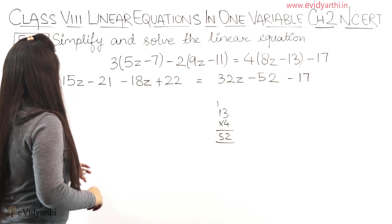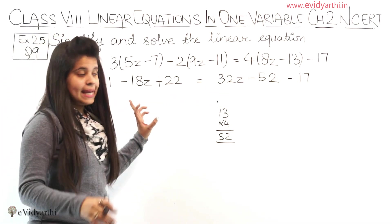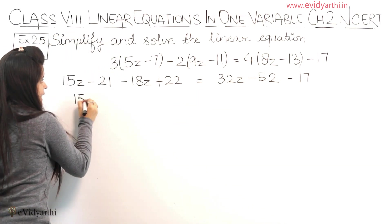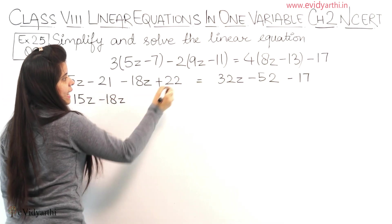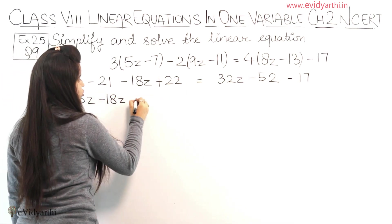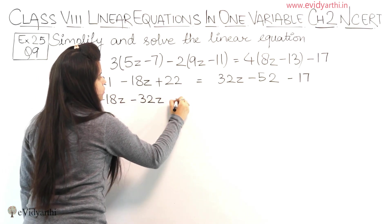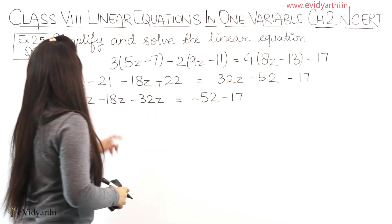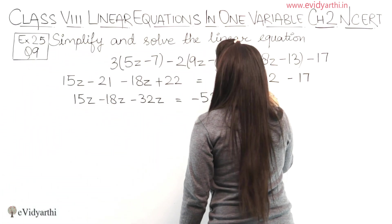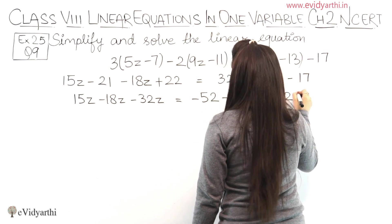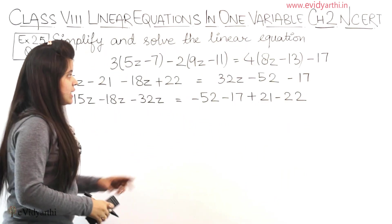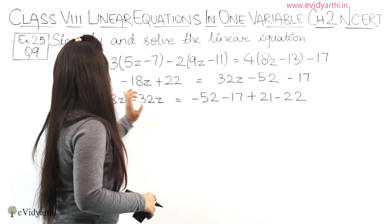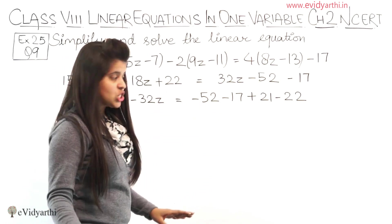Now in the next step, we can group z terms on one side and numbers on the other side. We have 15z minus 18z, and here plus 32z equals to minus 52 minus 17. And here the numbers will be plus 21 and minus 22, because their signs change when we transfer. The 32z also becomes minus.